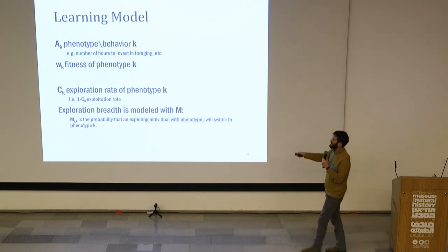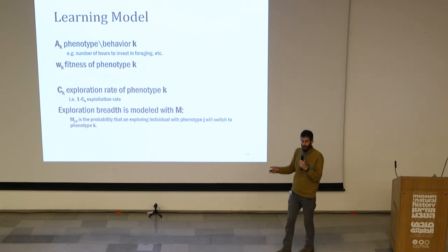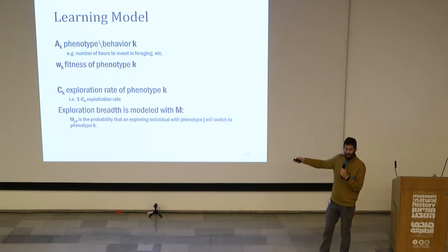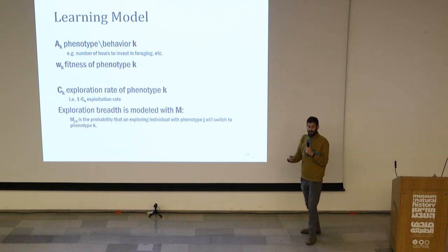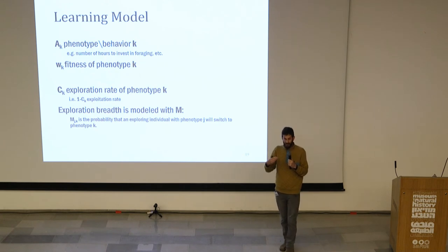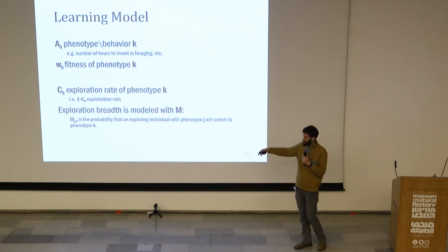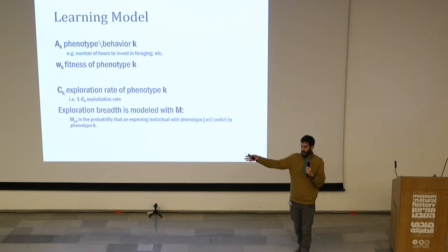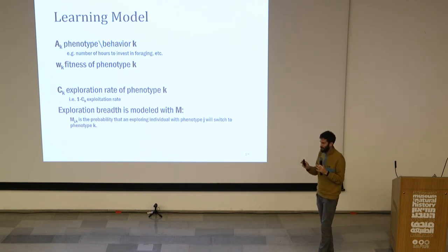Lastly, a learning model. In this case AK is some phenotype or behavior K, where K is an integer — for example, the number of hours to invest in foraging. WK is the fitness of the phenotype that forages for K hours, and CK is an exploration rate of phenotype K: the probability that instead of using the phenotype you got from your parent, you try a different phenotype or behavior. CK is exploration and one minus CK is exploitation. M is the exploration breadth — if you're exploring, what are you likely to explore? These are four concrete models, still high-level but more concrete than the general model.